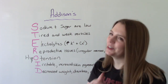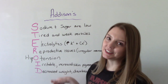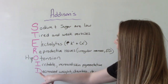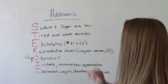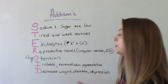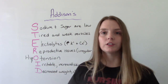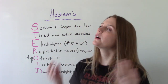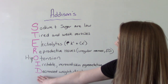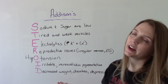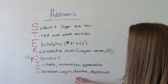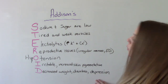O is for hypotension — so low blood pressure. I is for irritability or increased skin pigmentation, which can be all over so they look a little tan, or it can be splotchy patches. D is for decreased weight — they're losing weight unintentionally and may have diarrhea or depression.